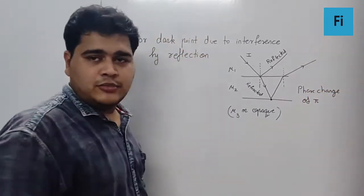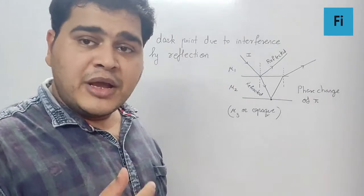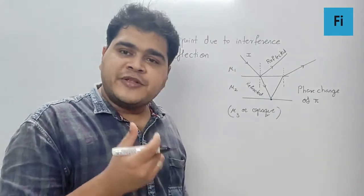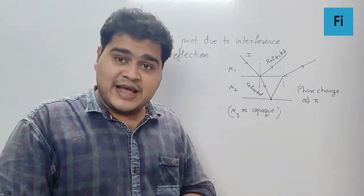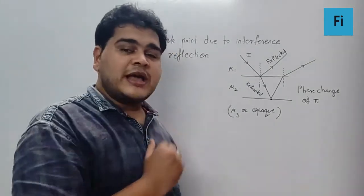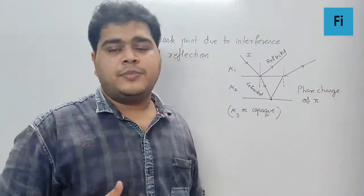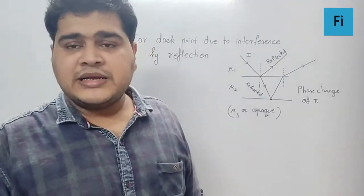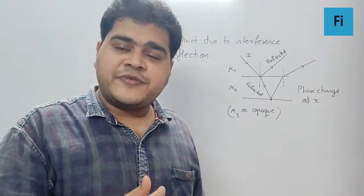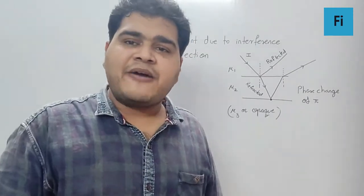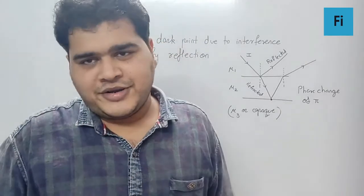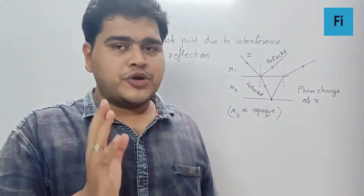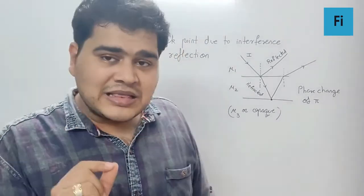Because of which the path difference formula which we generally use for constructive interference, that is nλ, for this scenario we use it for the dark point. That is, nλ will stand for path difference for a dark point and (n - 1/2)λ will stand for path difference for bright point. This is very important, you need to pay attention to it.